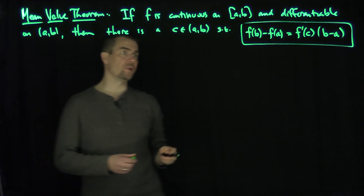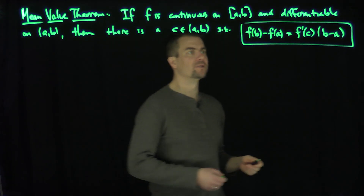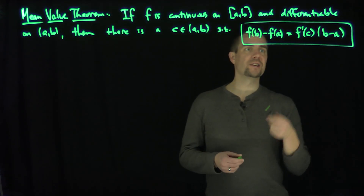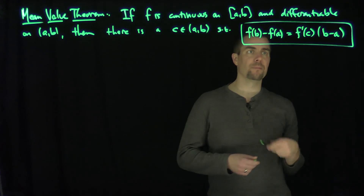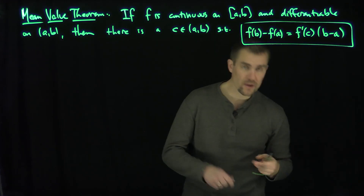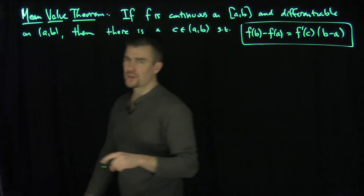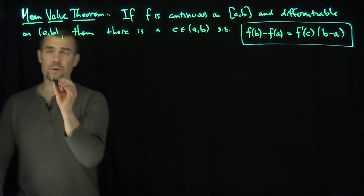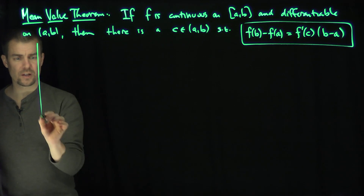So that's beautiful. You can always find a c between a and b such that the slope of the secant line between a and b is given by the slope of the tangent line at c. The geometry helps us out a lot with the proof, actually. So let's draw the picture.